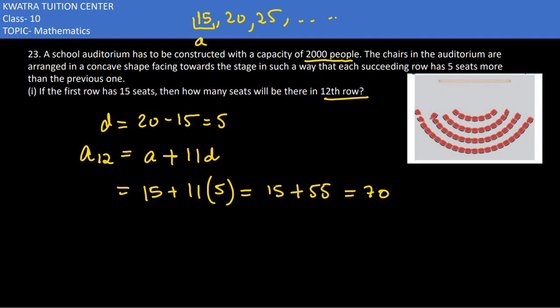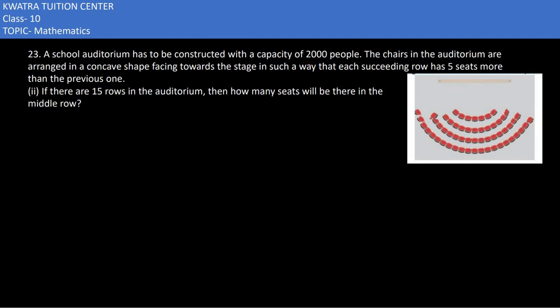In the second part, if there are 15 rows in the auditorium, how many seats will be there in the middle row? With 15 rows, the middle row is the 8th row. So we need to find a8 — how many seats are in the 8th row. Our first term a was 15.